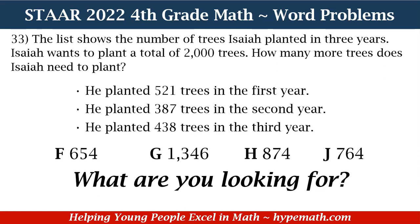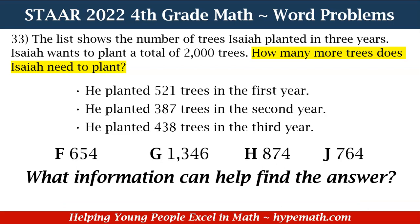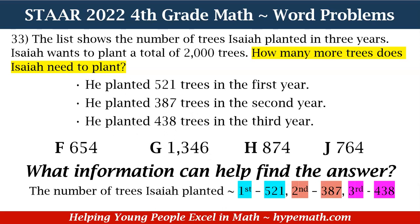In order to solve this problem, we need to know what we are looking for, and we are looking for how many trees Isaiah needs to plant. Our next question will be, what information can help us find the answer? That information is the number of trees that Isaiah has already planted. As a friendly reminder, for the first year he planted 521 trees, the second year 287 trees, and for the third year 438 trees. That's a lot of trees.